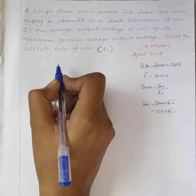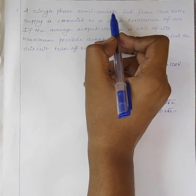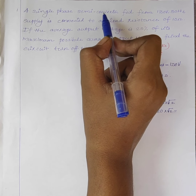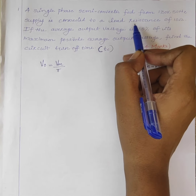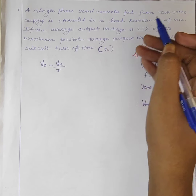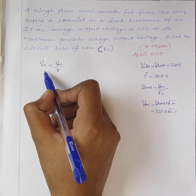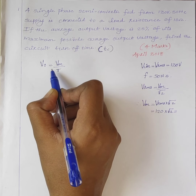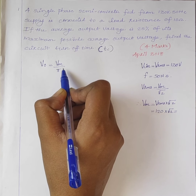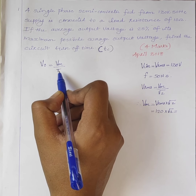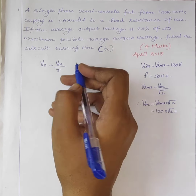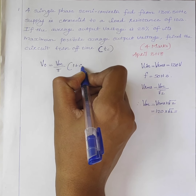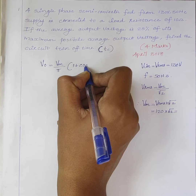In the case of a single-phase semi-converter with resistive load, the average value of output voltage V0 is equal to Vm divided by pi, into 1 plus cos alpha.